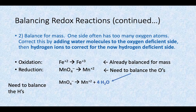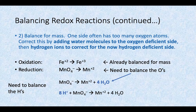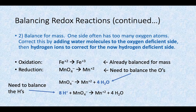By adding water, we've also added hydrogen atoms into solution. Our right-hand side now has eight H's, and our left-hand side has none. So our next step is to balance the H's by adding hydrogen ions — this is possible because we're balancing in an acidic solution, so hydrogen ions are floating around. We add eight H⁺ to the left-hand side. Now everything balances mass-wise: eight hydrogens on each side, one manganese on each side, and four oxygens on each side.